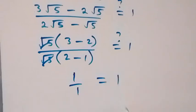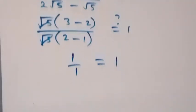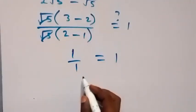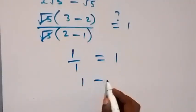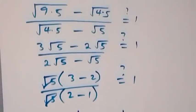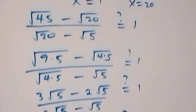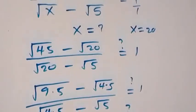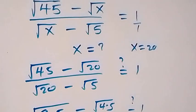That gives 1 over 1, which equals 1. The left-hand side equals the right-hand side, confirming that x equals 20 is the solution.